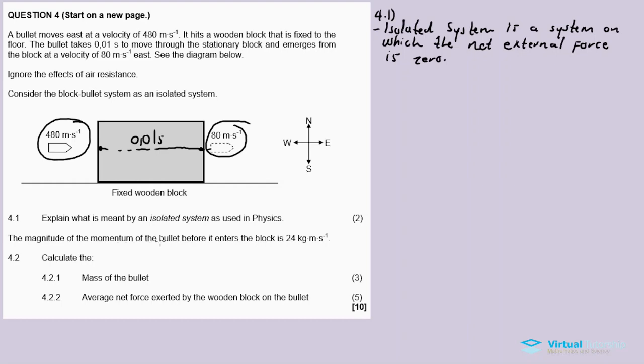The magnitude of the momentum of the bullet before it enters the block is 24 kilogram meters per second. Question 4.2: Calculate the mass of the bullet. Well, since they gave us the momentum as 24, this is the value for P. I'm looking for the mass, and I do have the initial velocity which is 480 meters per second.